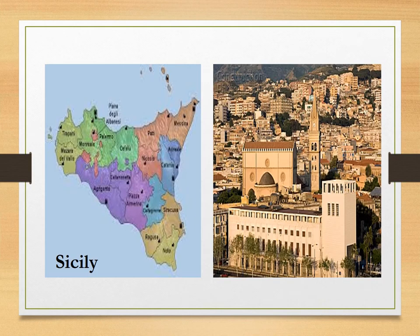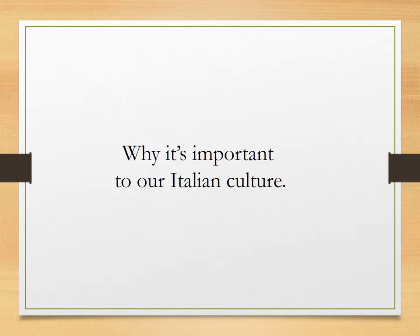This is Sicily, and as you can see, Messina is up top there — it's right across from the mainland. On the right is the city of Messina post-earthquake; I think this is mid-20th century. It's a very beautiful and extremely cultural city.